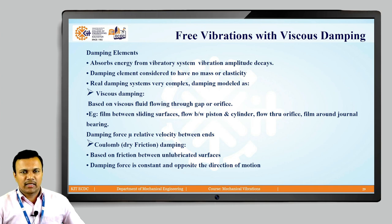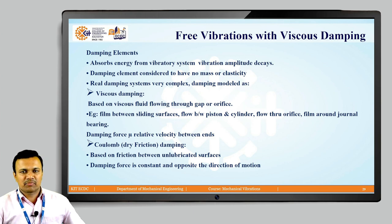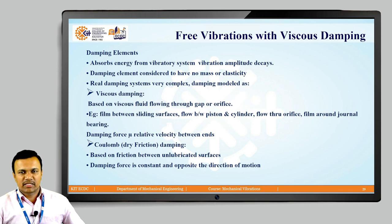Viscous damping is when a vibratory system is vibrating in a viscous fluid — that can be a liquid or a gas. If you are doing any experiment in an open environment, there will be air fluid present and it will have an effect on the vibration amplitude. Examples for this are the film between sliding surfaces, the flow between the piston and cylinder, flow through an orifice, and film around the journal bearing. The damping force is proportional to relative velocity between the ends.